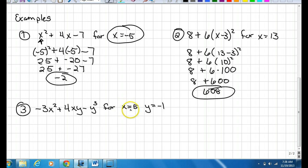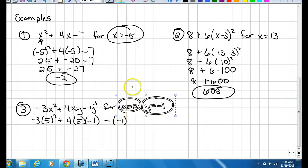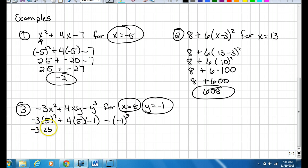Same rules apply for this one, except this time we have two variables. We have an x and a y. So you just need to substitute these in for the two different variables in the equation. So minus 3 times 5 squared plus 4 times 5 times negative 1 minus negative 1 to the third power. Negative 3 times 25 plus 4 times 5 is 20 times negative 1 is negative 20.